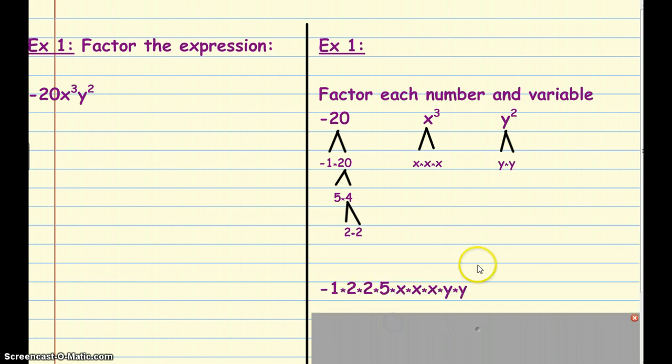Then what we can do is bring everything at the end of these little black lines, these arrows that have all finished. Negative 1 times 2 times 2 times 5, and then we've got x times x times x, and then y and y. Here's our last two y's, here's our x's, and notice that our numbers are in chronological order from least to greatest. So that's factoring the expression negative 20x³y².